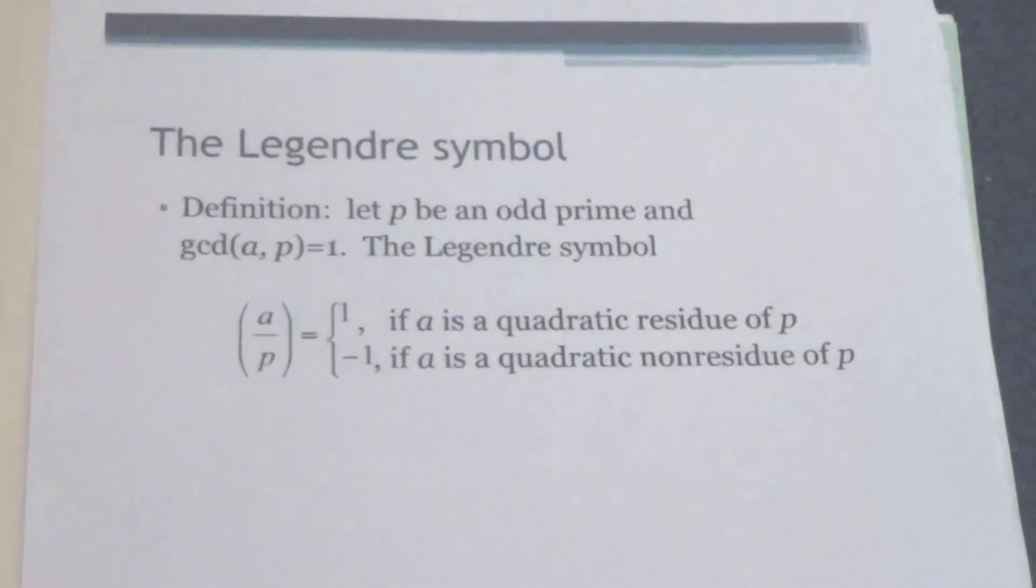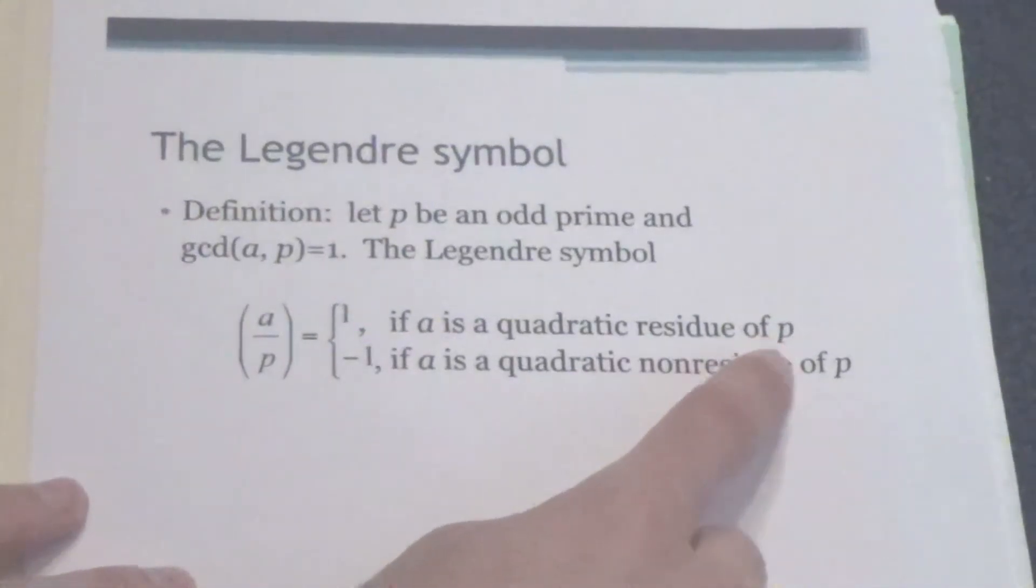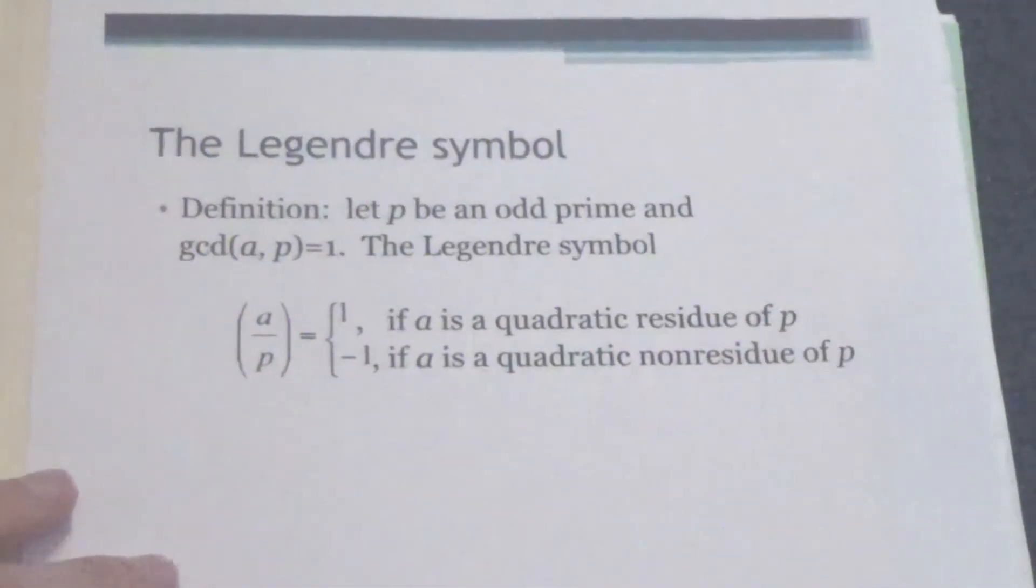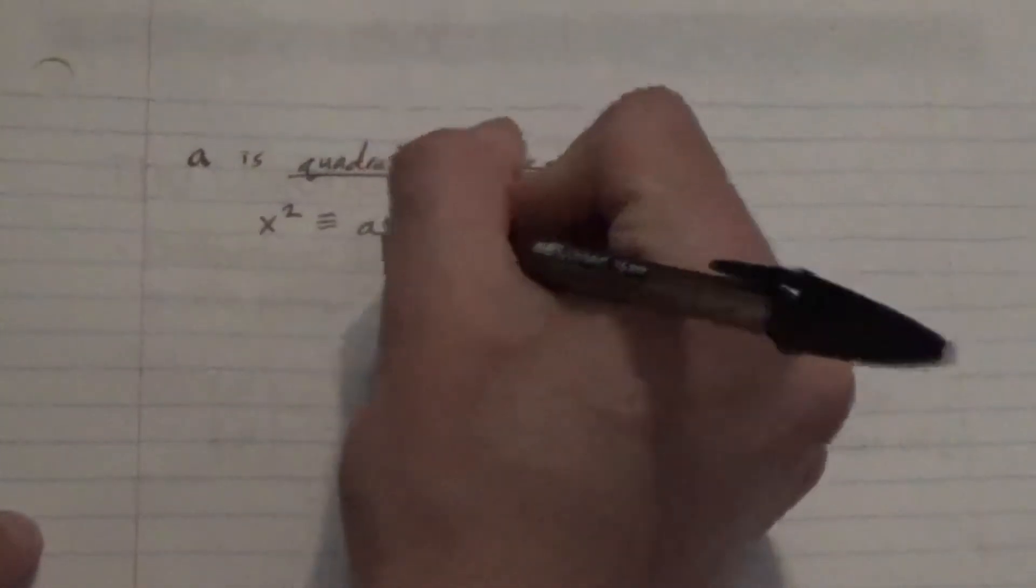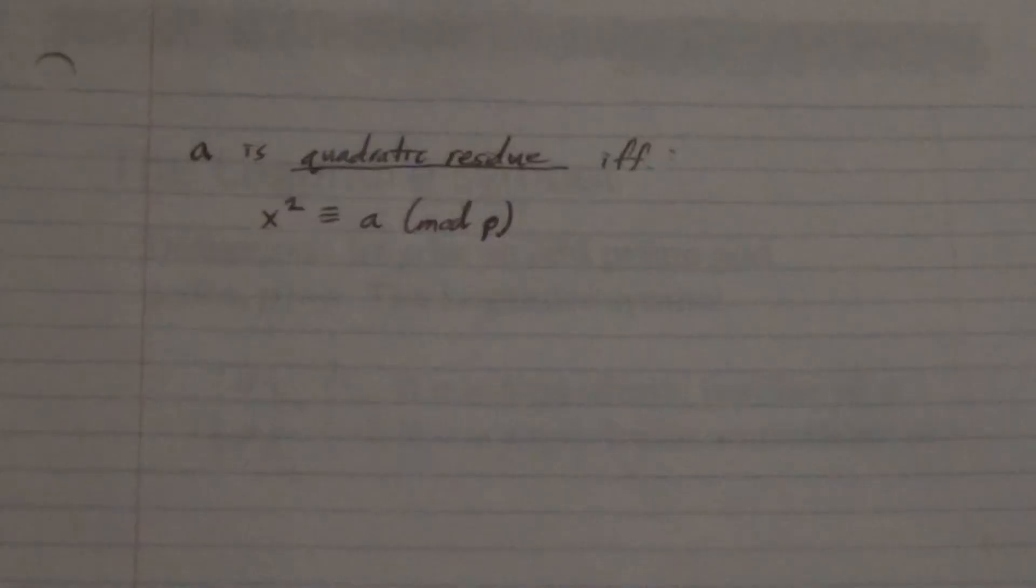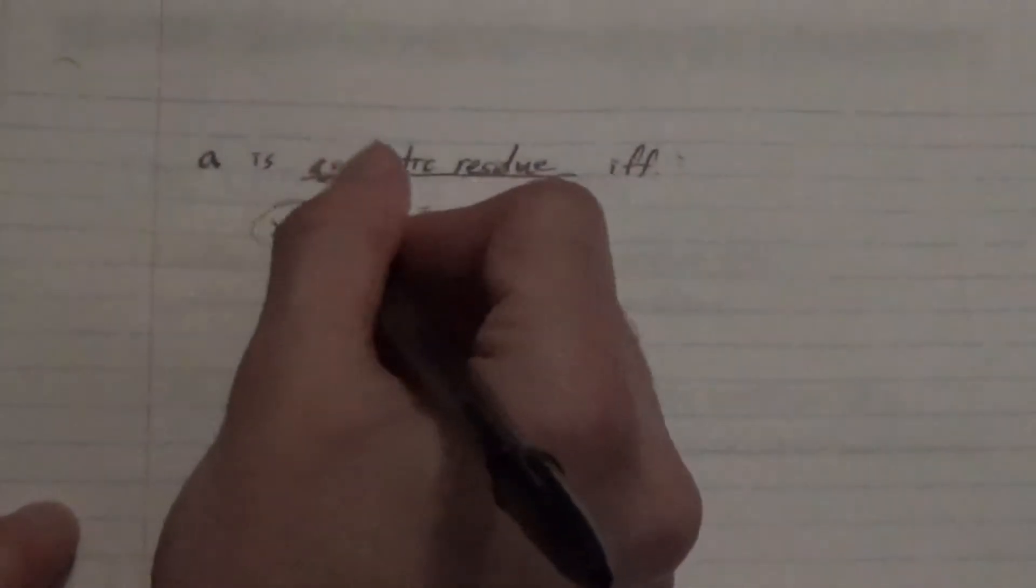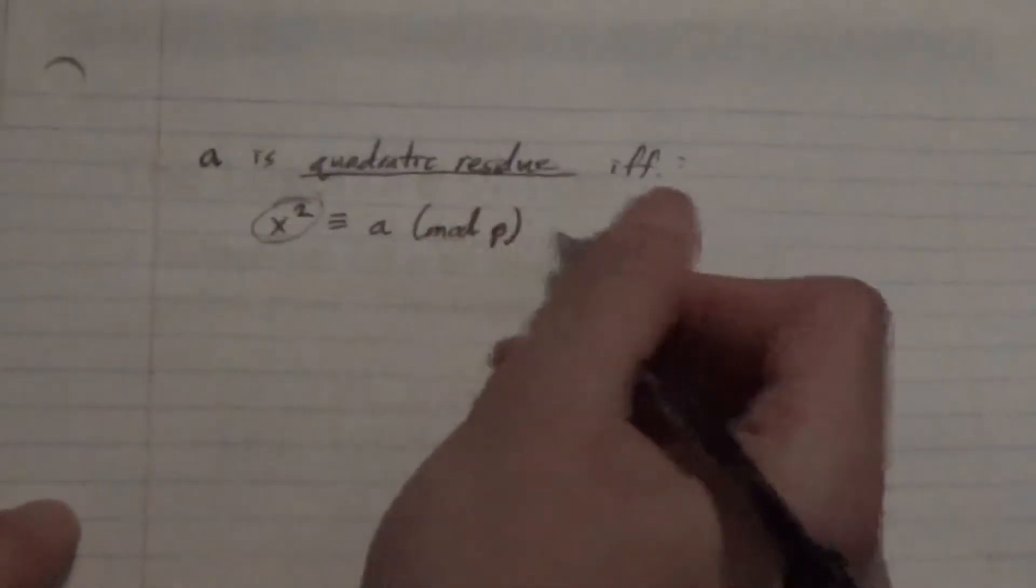We say that a number is a quadratic residue modulo p if there exists some integer x that solves this equation: x² ≡ a (mod p). This is just a definition in number theory. A is a quadratic residue if and only if there exists some integer x that solves x squared equals a mod p. We'll see many examples of this, but this is really what it means to be a quadratic residue. If there is some square which is congruent to a modulo some prime number.